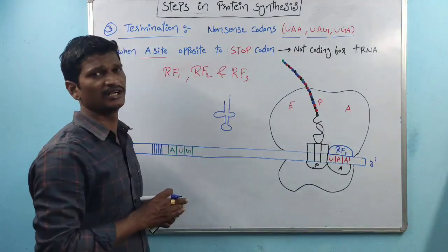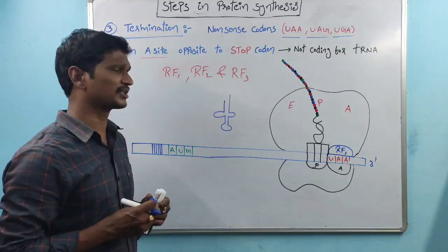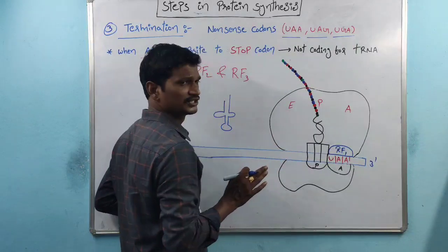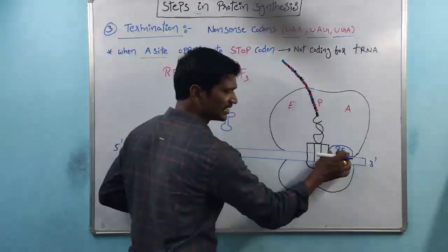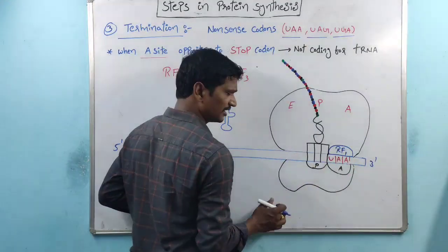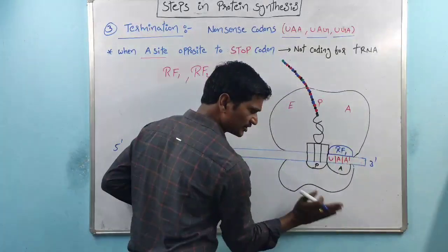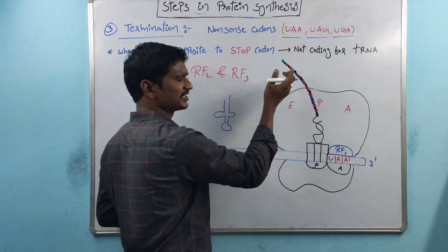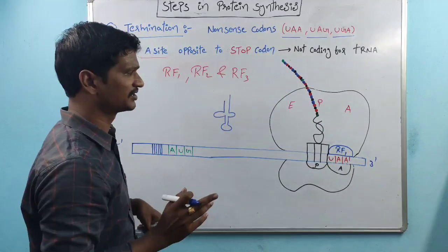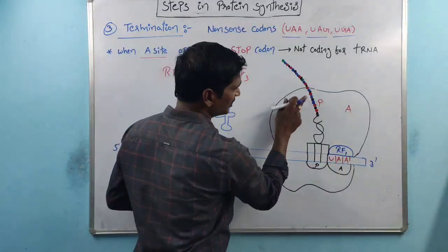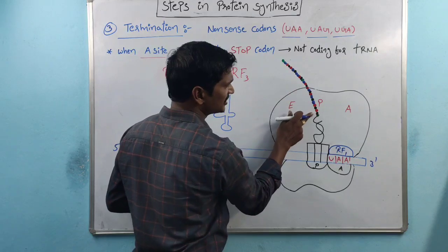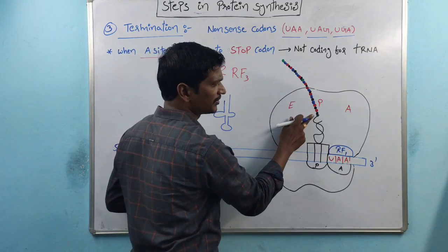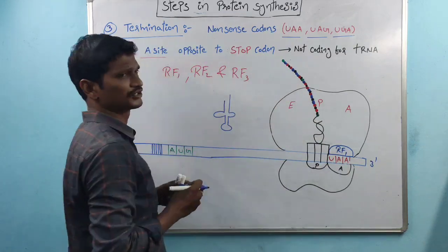Releasing factors are involved in the stopping of protein synthesis. Once the releasing factor appears, the 30S subunit is dissociated, the 50S subunit is dissociated, and the polypeptide chain is released. The different colors here indicate different types of amino acids, so this is one polypeptide chain that is released.